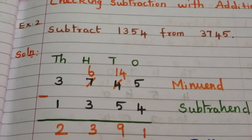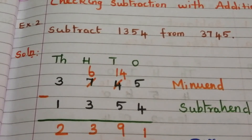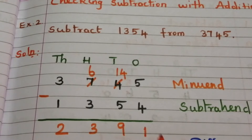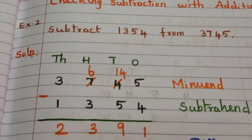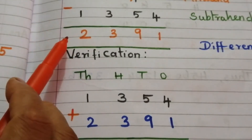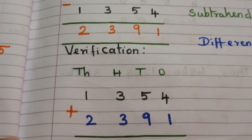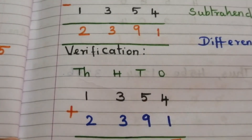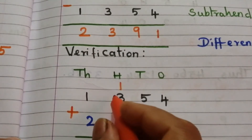Now we are going to check whether our answer is correct or not. To find this, we have to add our answer with the subtrahend. Now we are going to add the subtrahend and the difference. 4 plus 1 is 5, 9 plus 5 is 14 — write 4 and carry 1.